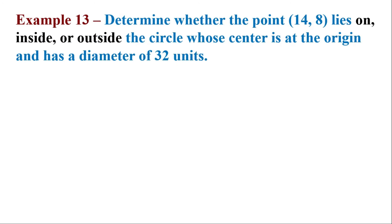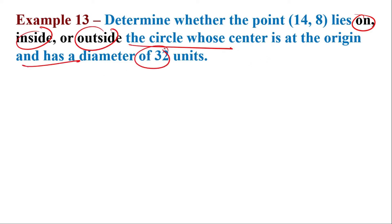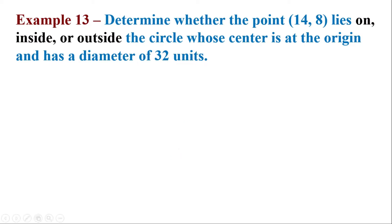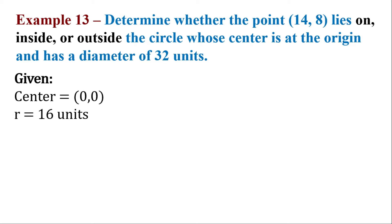Determine whether the point 14 comma 8 lies on, inside, or outside the circle whose center is at the origin and has a diameter of 32. First, we need to find the center, which is 0 comma 0, and we need to find the radius. The radius is half of the diameter, so that gives us 16 units.